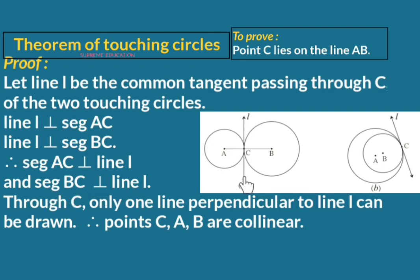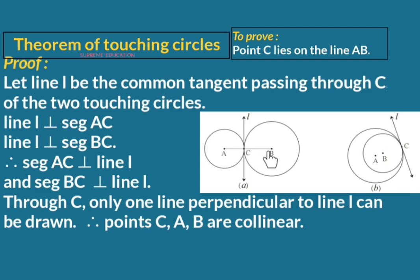In this diagram, there is a line L and a point C on line L, where AC is perpendicular to L and BC is perpendicular to L. But we know that if there is a line and a point on that line, then one and only one perpendicular can be drawn through that point to that line. Therefore, AC and BC are not separate or different lines — line AC and line BC must be the same line.